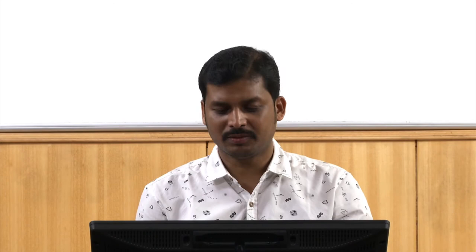Suppose Dirichlet conditions are prescribed at all sides, meaning U is given at all boundaries. To solve this problem, we subdivide the intervals X from 0 to A and Y from 0 to B into M sub-intervals in the X direction and N sub-intervals in the Y direction, each of width del X and del Y respectively. The total length A equals M·del X and B equals N·del Y.